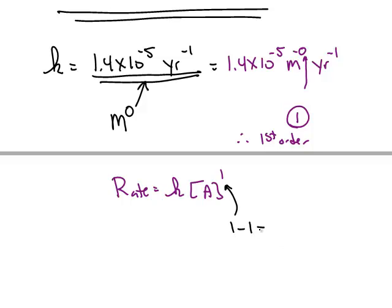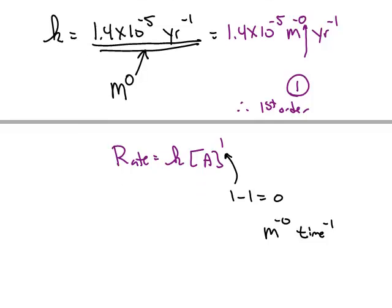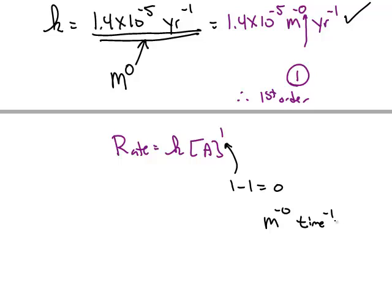Subtract the magic number 1, you get 0. Throw a negative sign in front of it, you get molarity to the negative 0. And it's always inverse units of time. So that matches what we got with the shortcut.